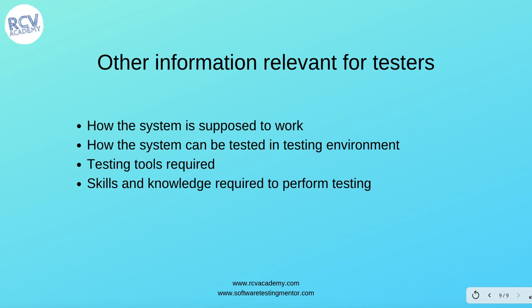There is also other relevant information for testers that helps them test the user story and ensure acceptance criteria has been met. This could include how the system is supposed to work, or how the system can be tested in a testing environment. If there is something new that the tester is not aware of, the business analyst or other stakeholders can provide input that can be defined in the acceptance criteria or in the other information section of the story.